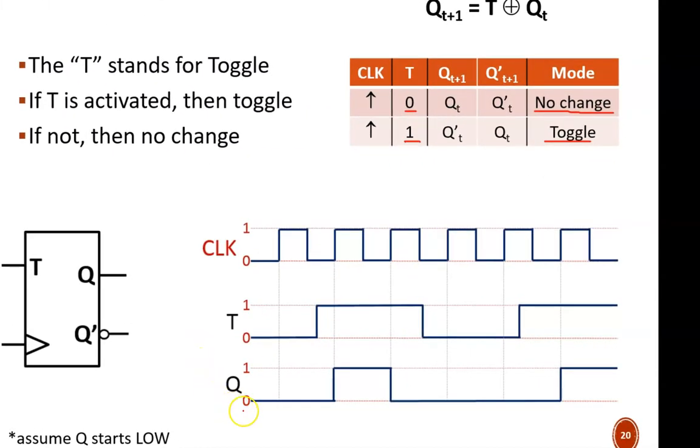So looking at the timing diagram, we see that Q begins at 0, and vertical lines are drawn at each of the positive edges. At that first positive edge, T equals 0, and therefore the circuit is in no change mode. Thus, Q remains at 0.